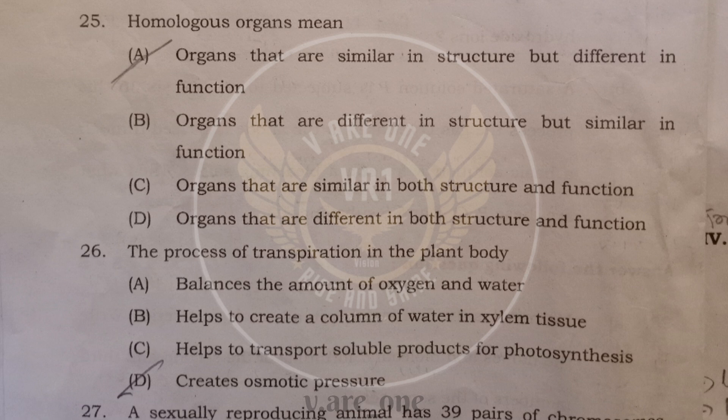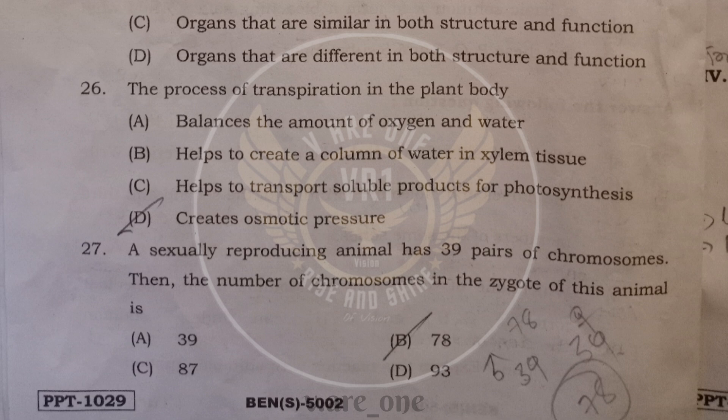26th, the process of transpiration in the plant body. Option D, it creates osmotic pressure. 27th, a sexually reproducing animal has 39 pairs of chromosomes. The number of chromosomes in the zygote of this animal is option B, 78.